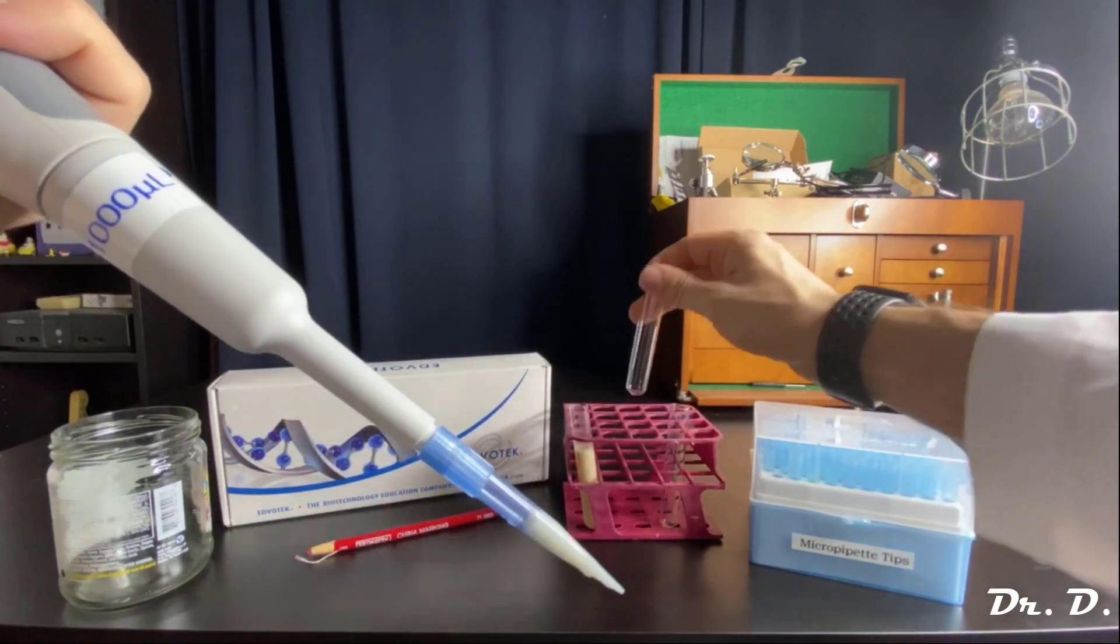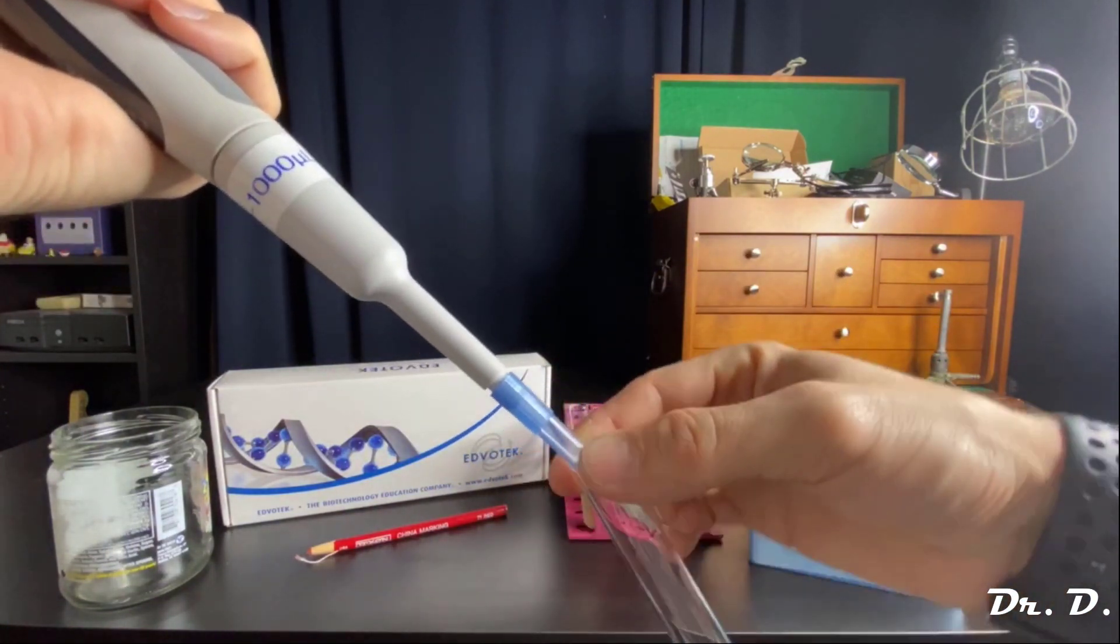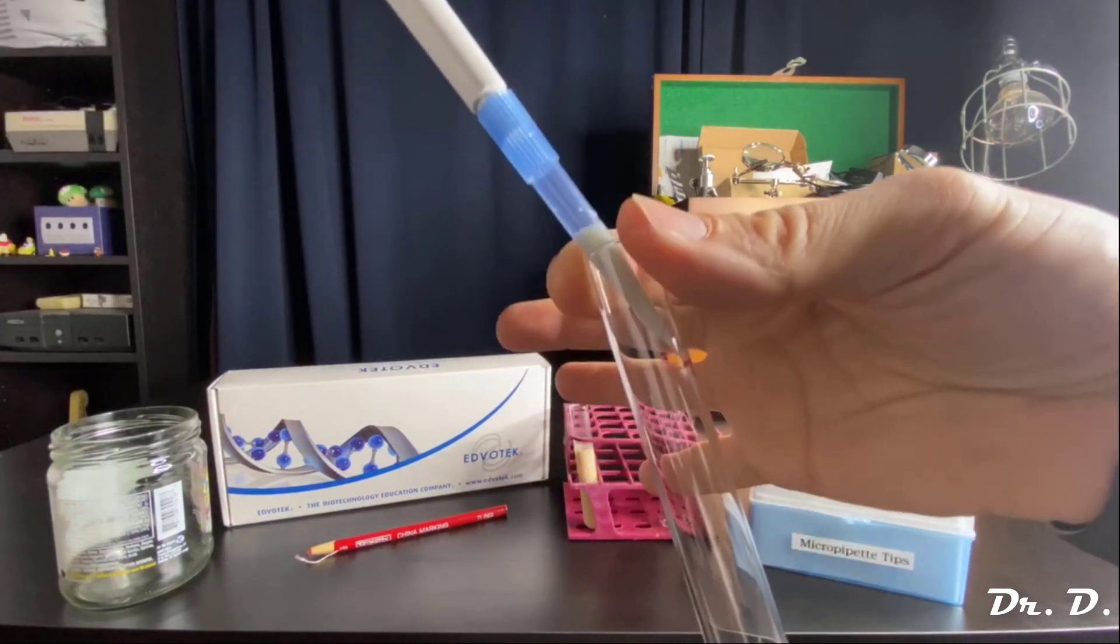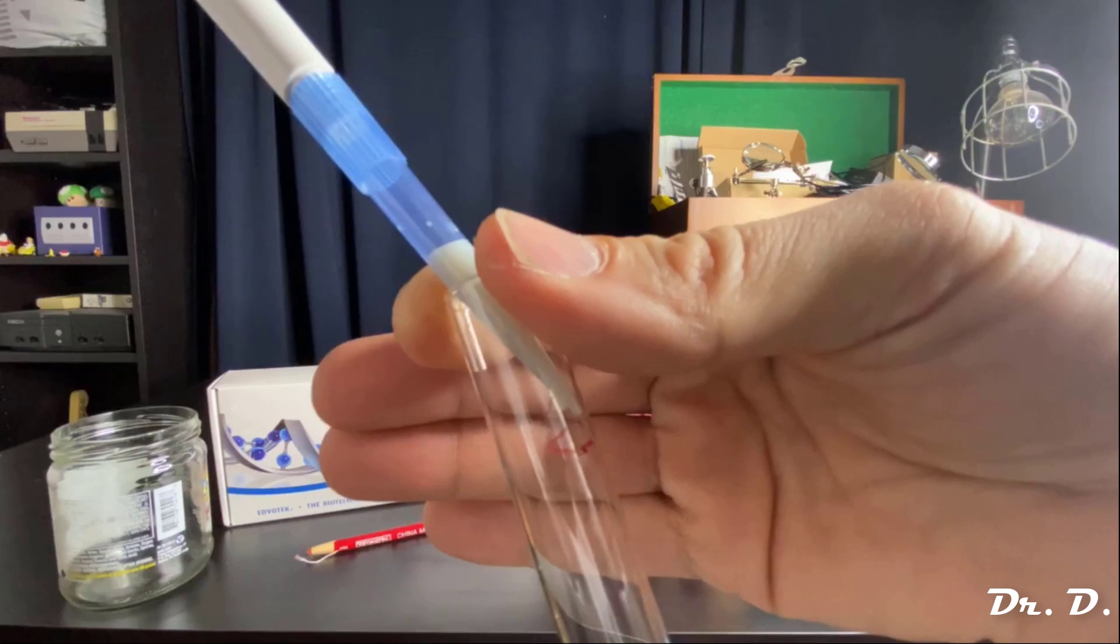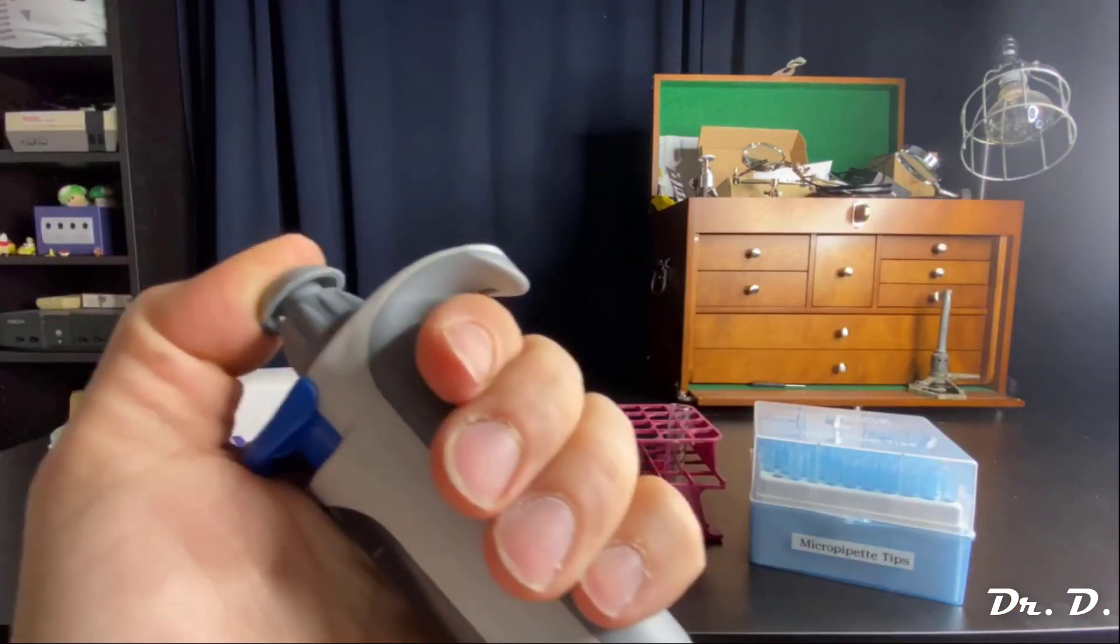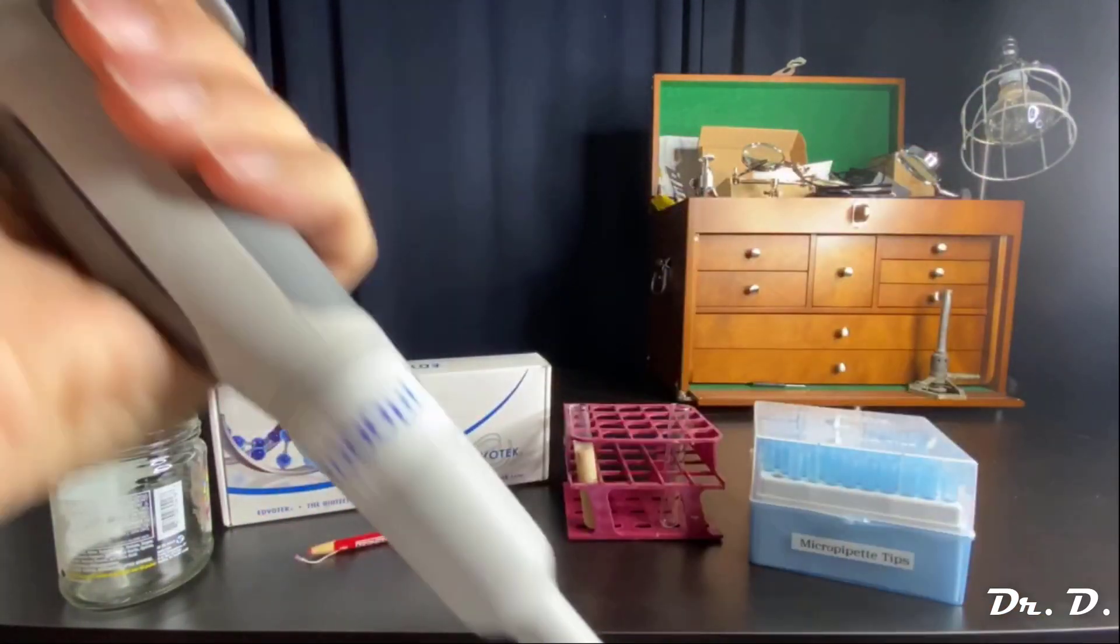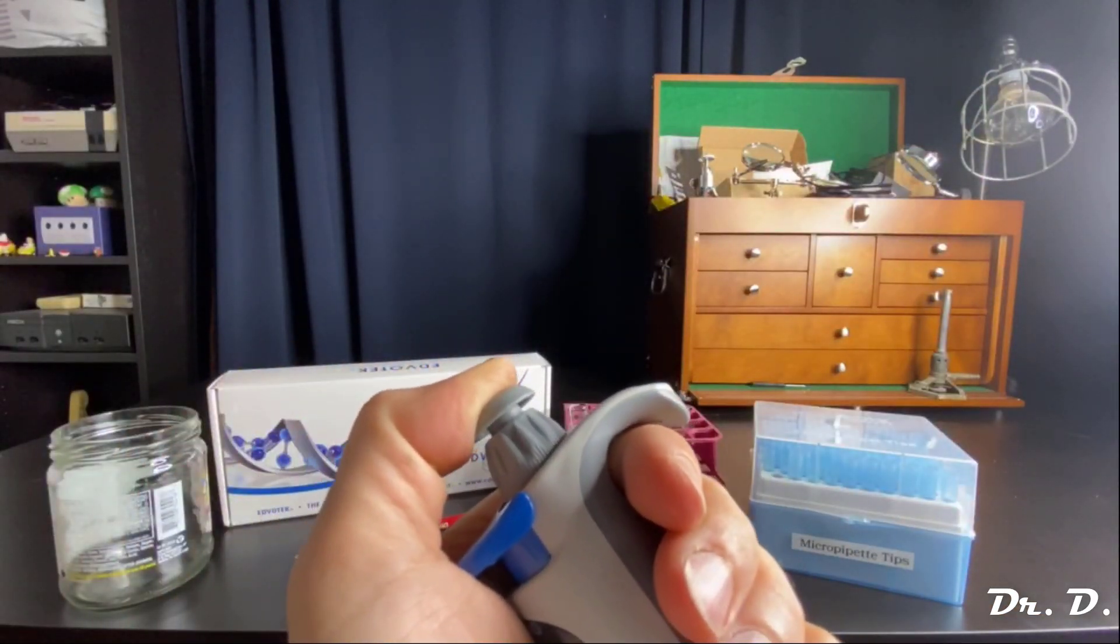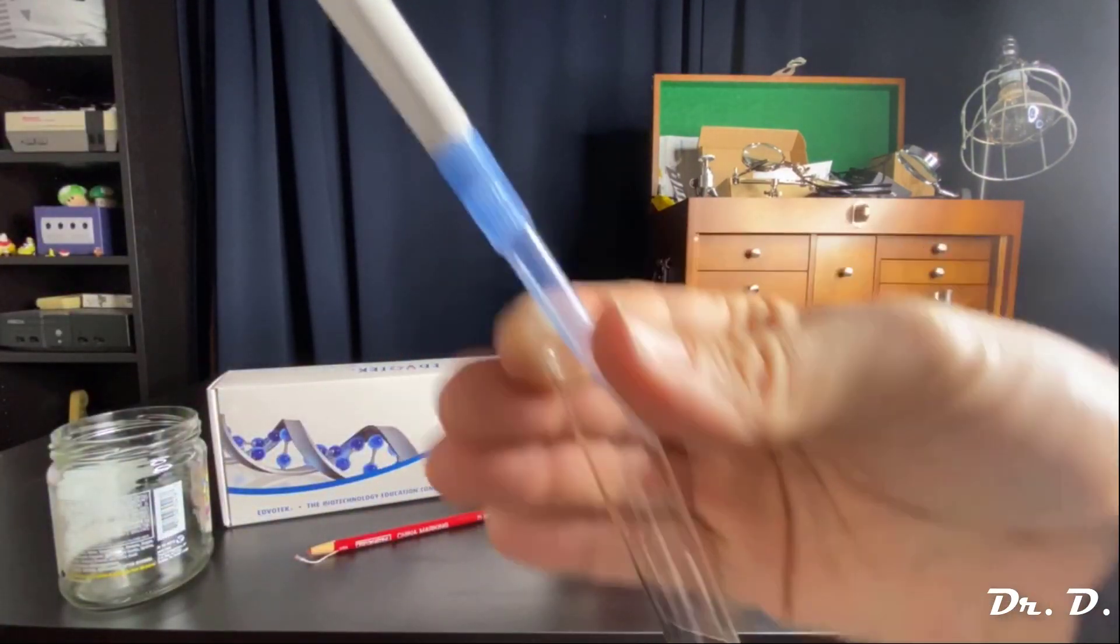Let me grab test tube two. And what do I do? I gently touch the side of the pipette. You can see here. I just touch the side to the glass. And then I very gently push down. Now watch. I push down to the first stop. And that evacuates most of the solution. But then I push down to the second stop. And that evacuates the rest of the solution.